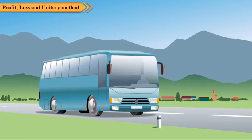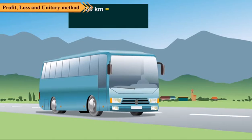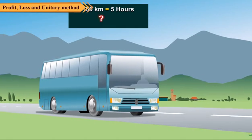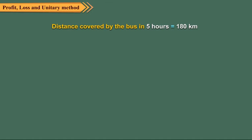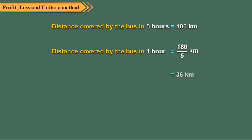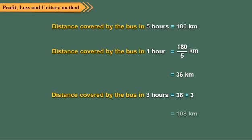Consider this example. A bus covers 180 km in 5 hours. How much distance will it cover in 3 hours? First, we find the distance covered by the bus in 1 hour by dividing 180 by 5, which gives 36 km. Then, we find the distance covered in 3 hours by multiplying 36 by 3. So, the distance covered by the bus in 3 hours is 36 into 3, that is 108 km.